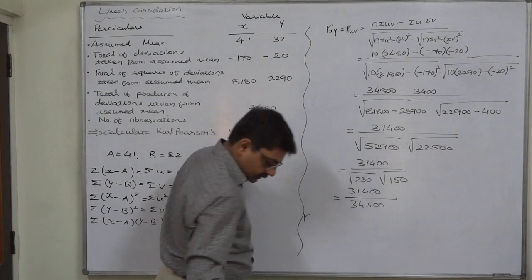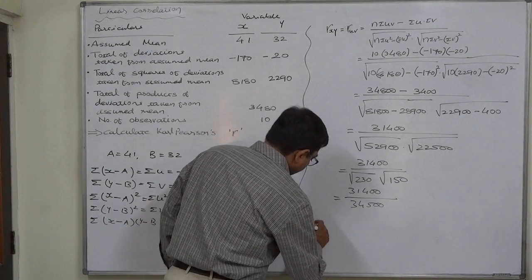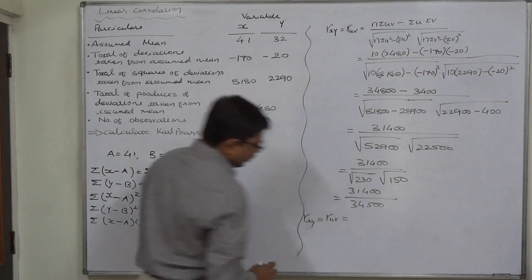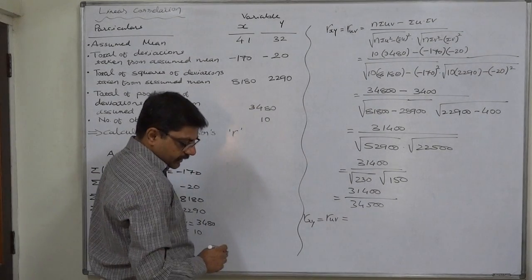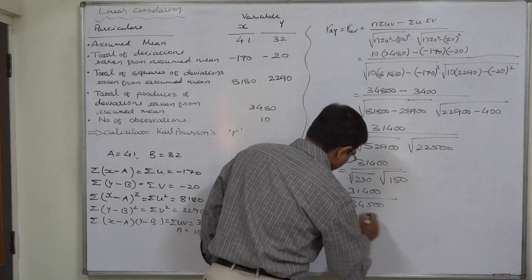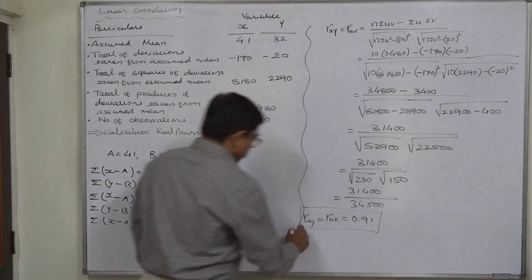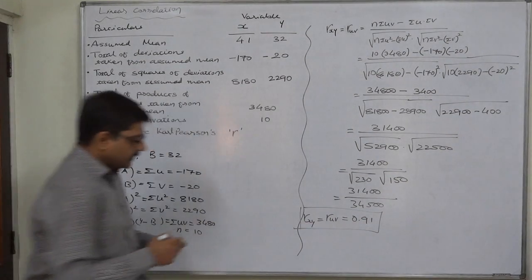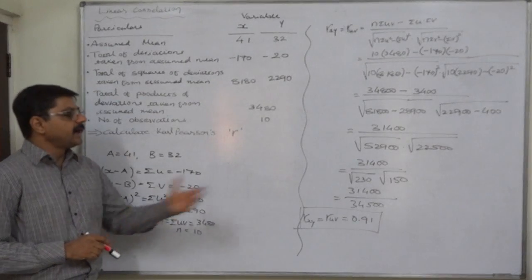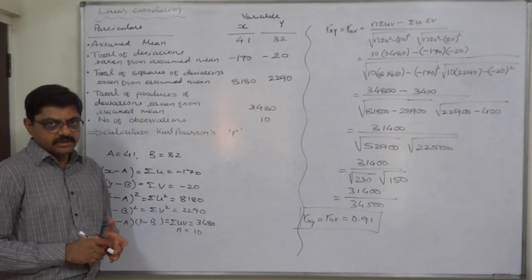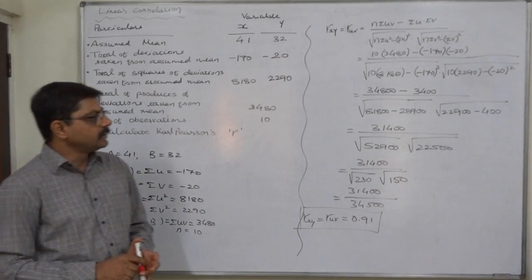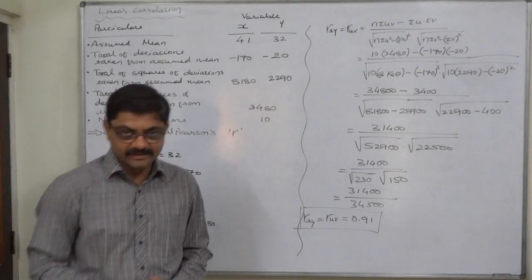So the coefficient of correlation between x and y equals the coefficient of correlation between u and v, which comes to 0.91. This indicates a high degree of positive correlation between the two variables. Thank you very much.